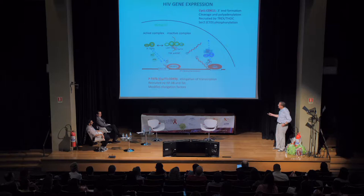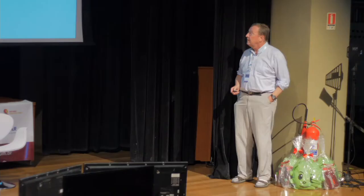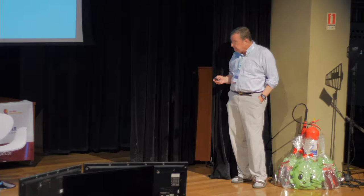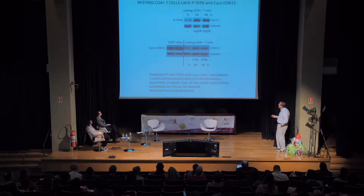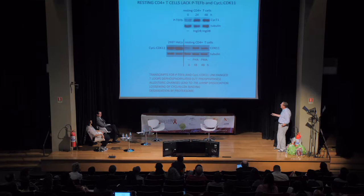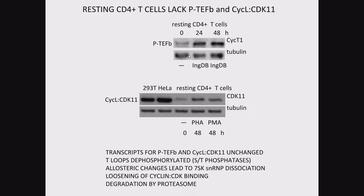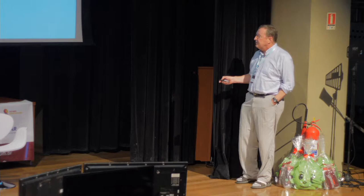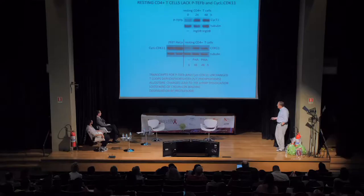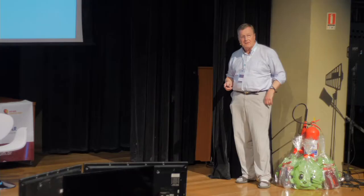P-TEFb and CDK11-Cyclin-L are missing in resting cells. It turns out that resting cells have almost no P-TEFb and almost no Cyclin-L CDK11. You have to increase the levels of these CDK kinases to be able to get any transcription from the HIV-LTR. This occurs because the T-loops of these CDK kinases are dephosphorylated in resting cells. Allosteric changes lead to 7SK snRNP dissociation — there is also no 7SK snRNP — and there is a loosening of Cyclin-CDK binding and degradation by the proteasome. All of the machinery for HIV transcription is missing in primary resting cells.